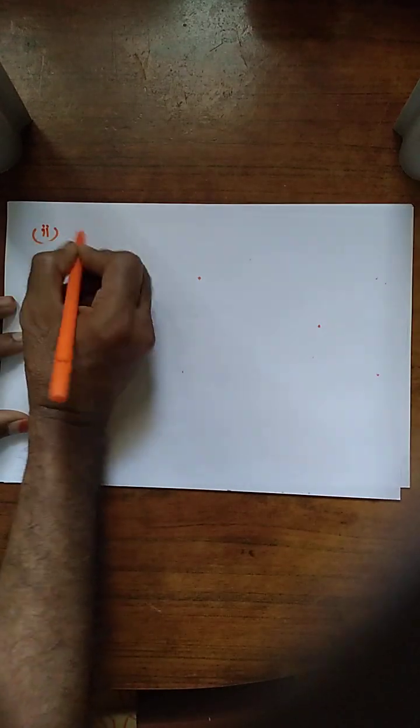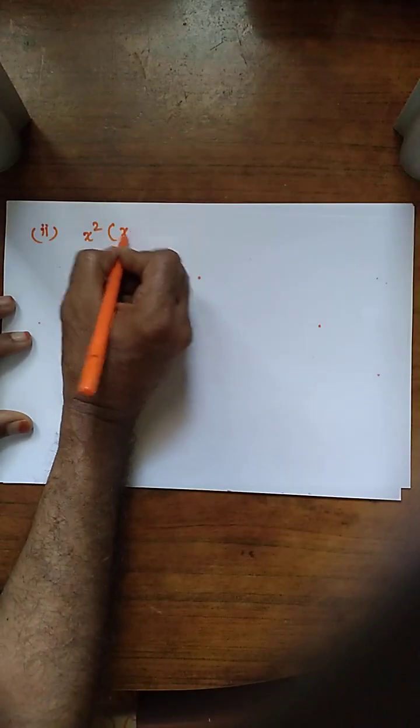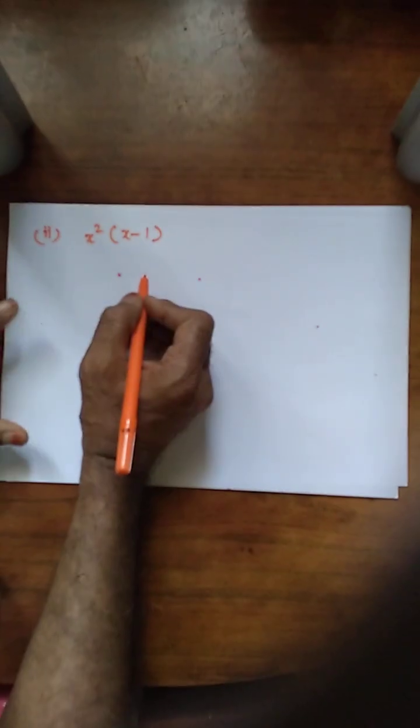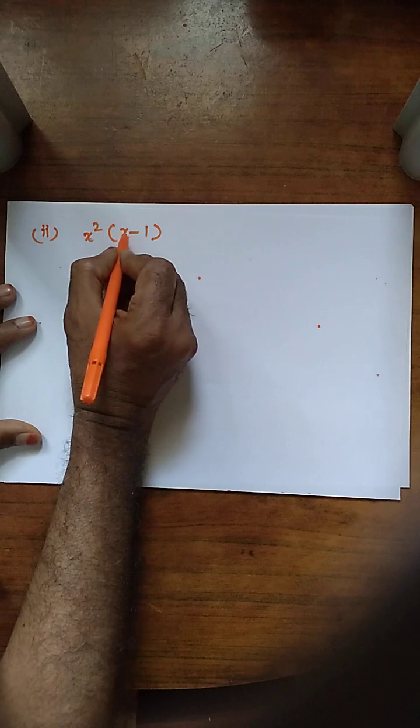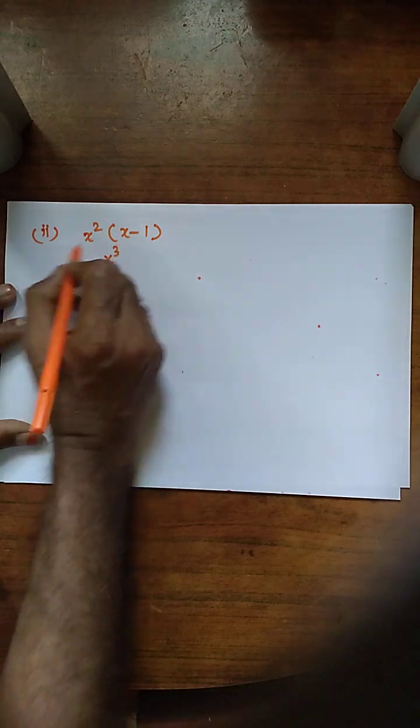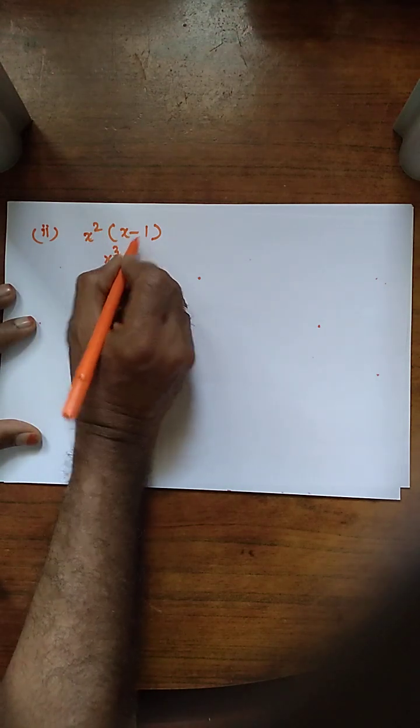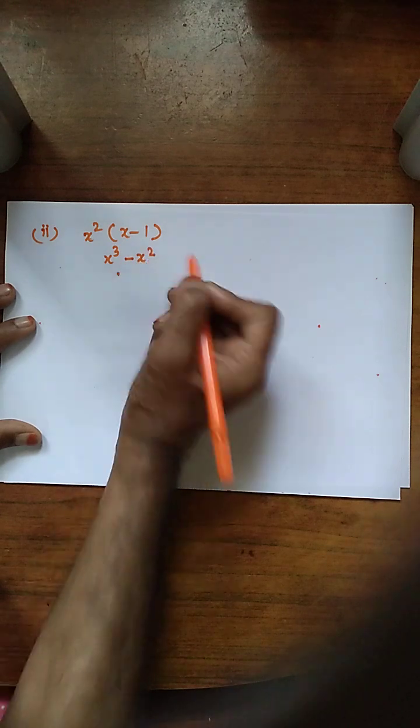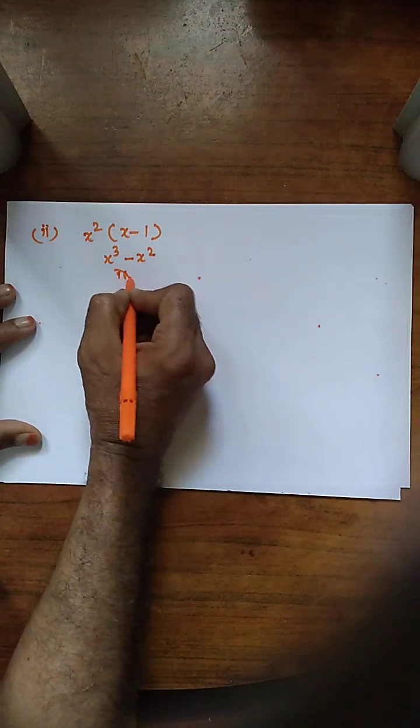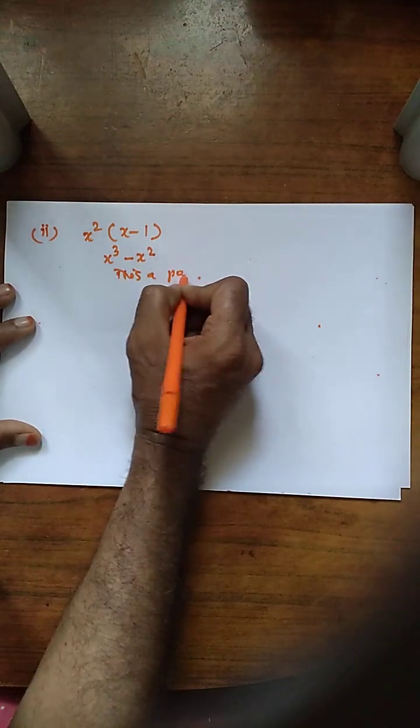Second subdivision: x squared into x minus 1 inside bracket. So x squared into x is x cubed, x squared into minus 1 is minus x squared. This is a polynomial.